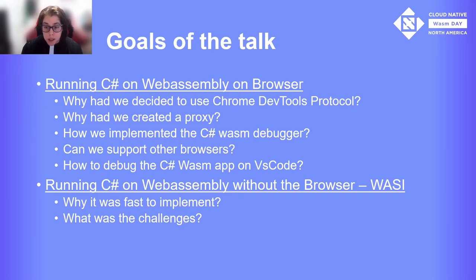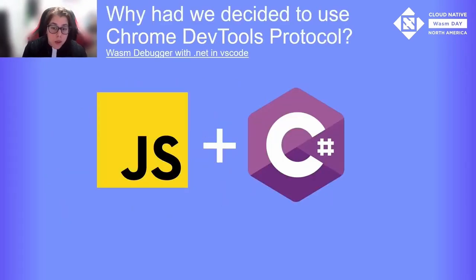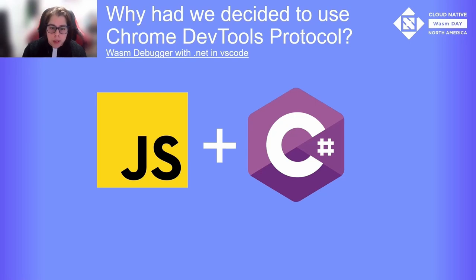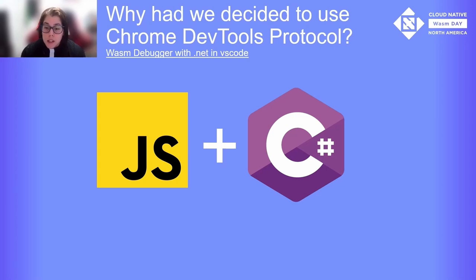We can execute and debug in both ways, and I will explain how we implemented the debugger support for both of them. The first thing I will try to explain is why we use the Chrome DevTools Protocol, which we will call CDP from now on. As our runtime already works for other platforms, we already had a protocol to talk to our runtime called Soft Debugger Protocol, and we will call it SDP from now on. The only way to talk to our runtime using SDP was via socket, and it was not possible to open a socket in WASM running inside the browser.